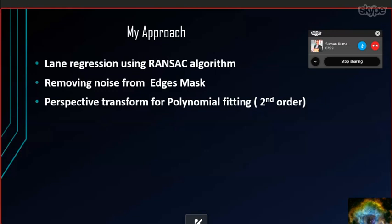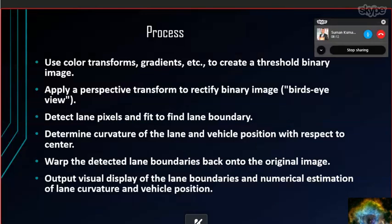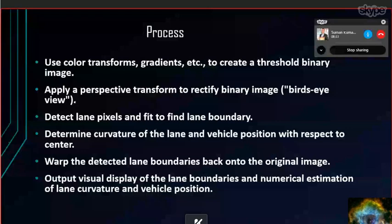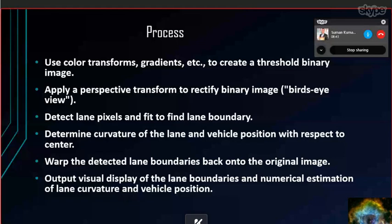This is my process in a flowchart that details how I proceed through the whole thing in my code. First, I use color transformation to create a special binary image, then I apply perspective transform to rectify the binary image and detect the lane pixels and fit to find the lane boundary. In the perspective transform, I use it to make it so we can actually fit the second-order polynomial, because in our earlier implementation we couldn't do that.